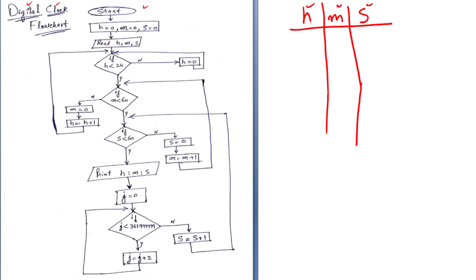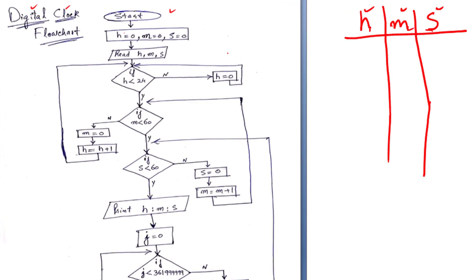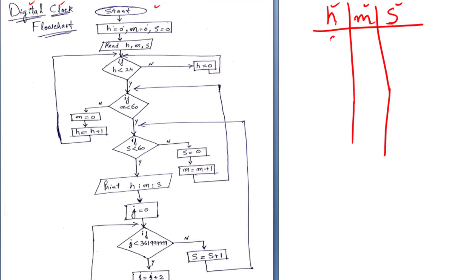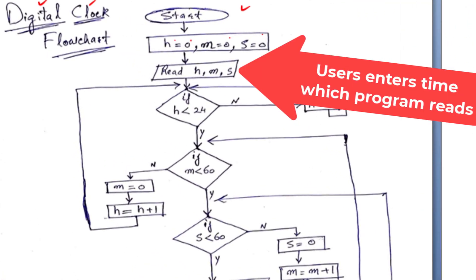H for hours, M for minutes, and S for seconds. I have written these three variables and initialized them to 0, 0, and 0. But here I am asking the user to enter the current time. In a clock, when you activate it — when you buy it from the market or insert a battery — you are going to set up a time. So we are going to give a starting time.